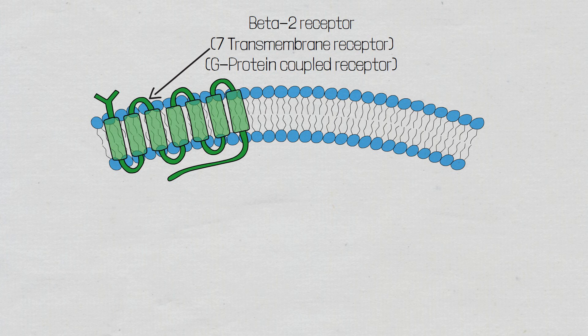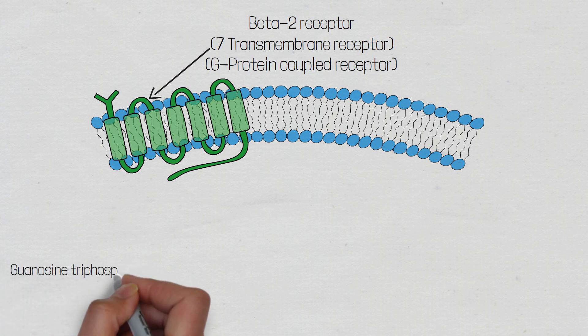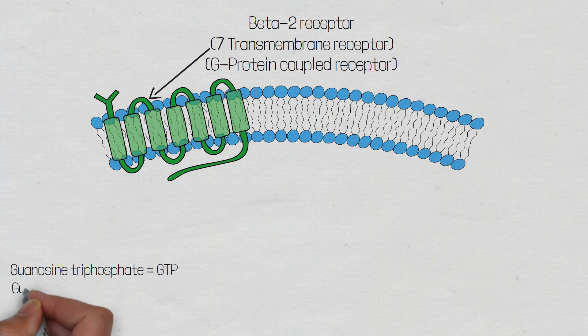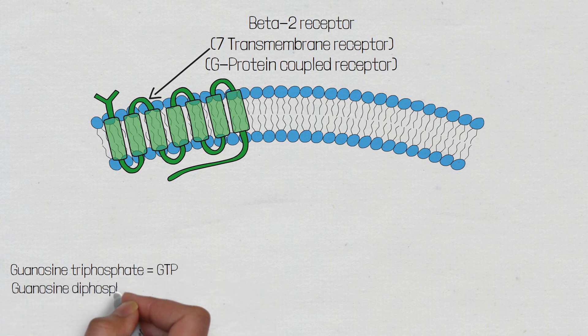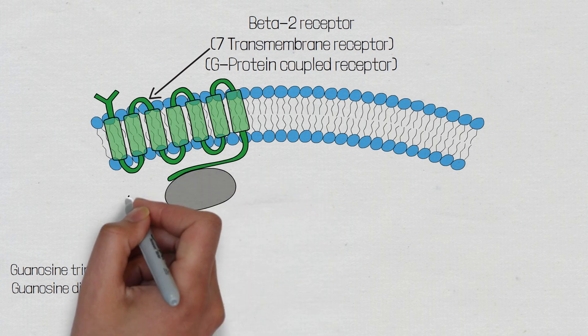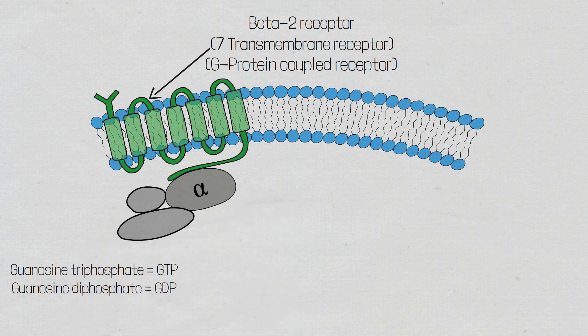These G-proteins have the ability to bind guanosine triphosphate, known as GTP, and guanosine diphosphate, known as GDP, which is why they are given the name G-proteins. In the inactive form, these G-proteins are bound to guanosine diphosphate. G-proteins consist of three subunits labelled alpha, beta, and gamma — the first three letters of the Greek alphabet — and GDP is bound to the alpha subunit.